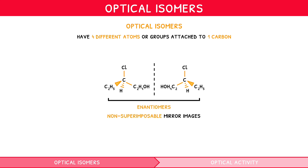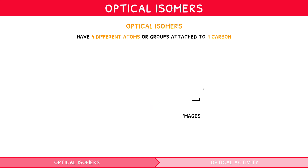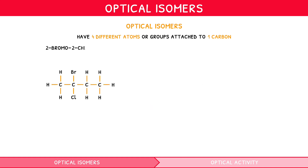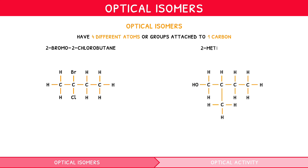But what does this all mean? Let's consider two examples: 2-bromo-2-chlorobutane and 2-methylbutane-1-ol, represented by the following displayed formula.